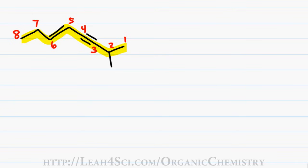Now let's put the name together. I have 8 carbons giving me a first name of oct. I have a double bond on carbon 5 giving me a last name of 5-ene. I also have a triple bond on 3 giving me a second last name of 3-yne, and then we have a methyl group on carbon 2 giving me the prefix 2-methyl.